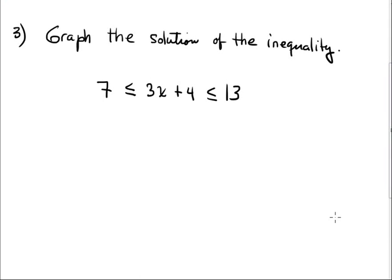Okay. Graph the solution of the inequality. It's a compound inequality. For solving this, the procedure is always the same. You subtract 4 here. This part cancels out. That's the intention. Bring down 3x.